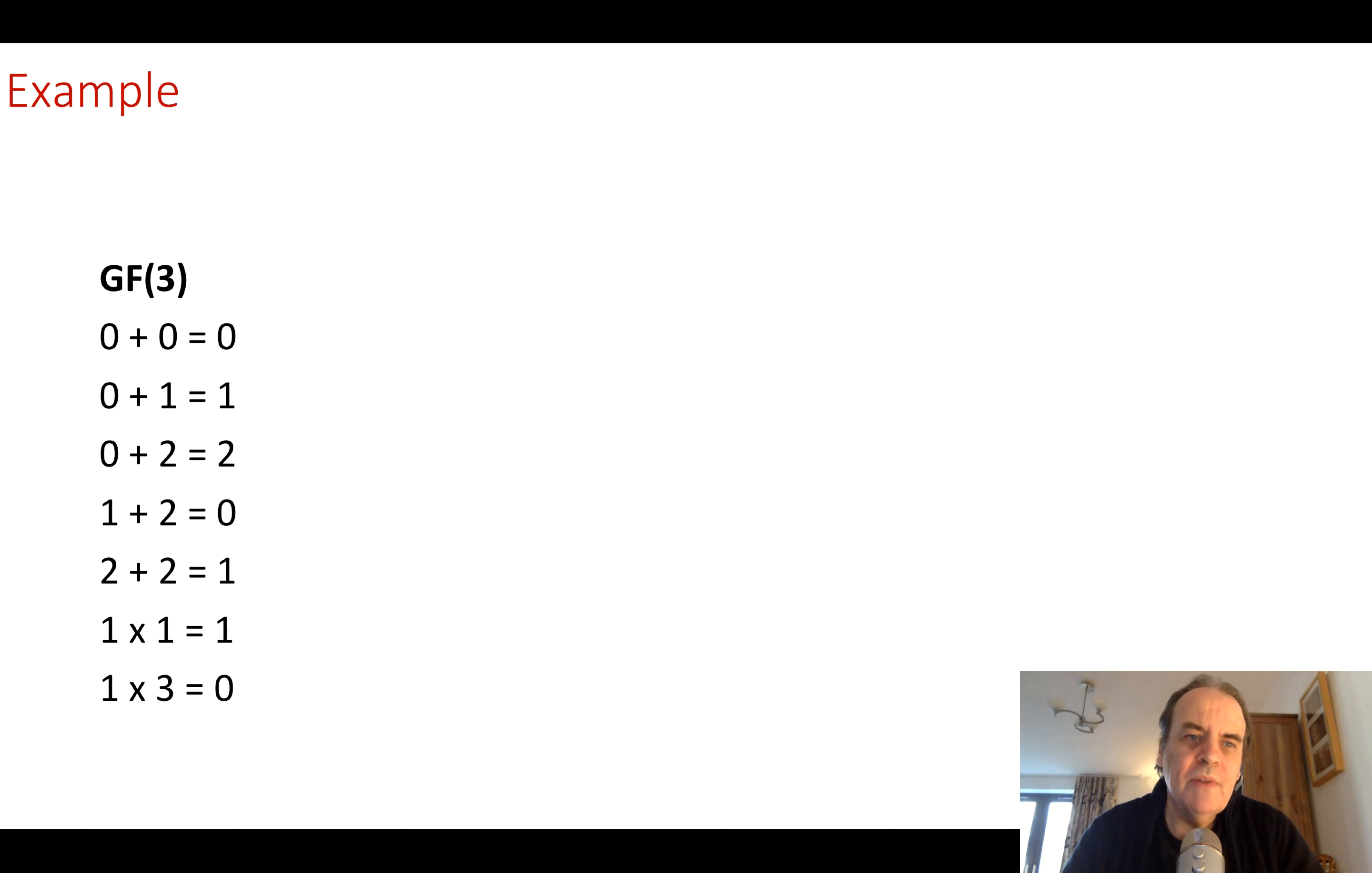Here's an example of a Galois field of 3. 0 plus 0 is 0, 0 plus 1 is 1, 0 plus 2 is 2, 1 plus 2 is 3. And so we can't get 3 so we roll over back to 0 again.